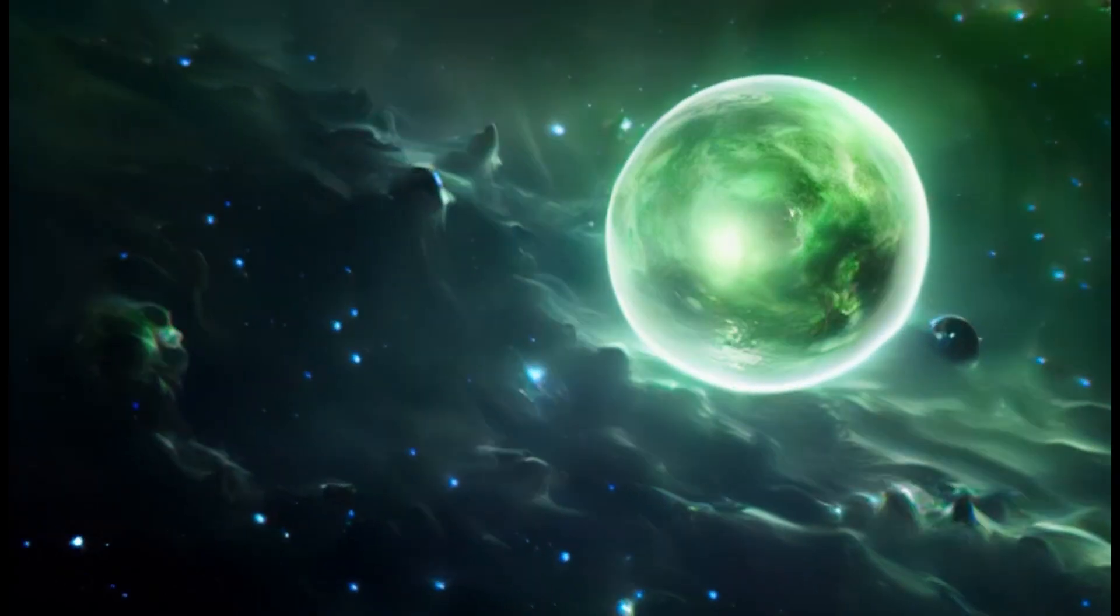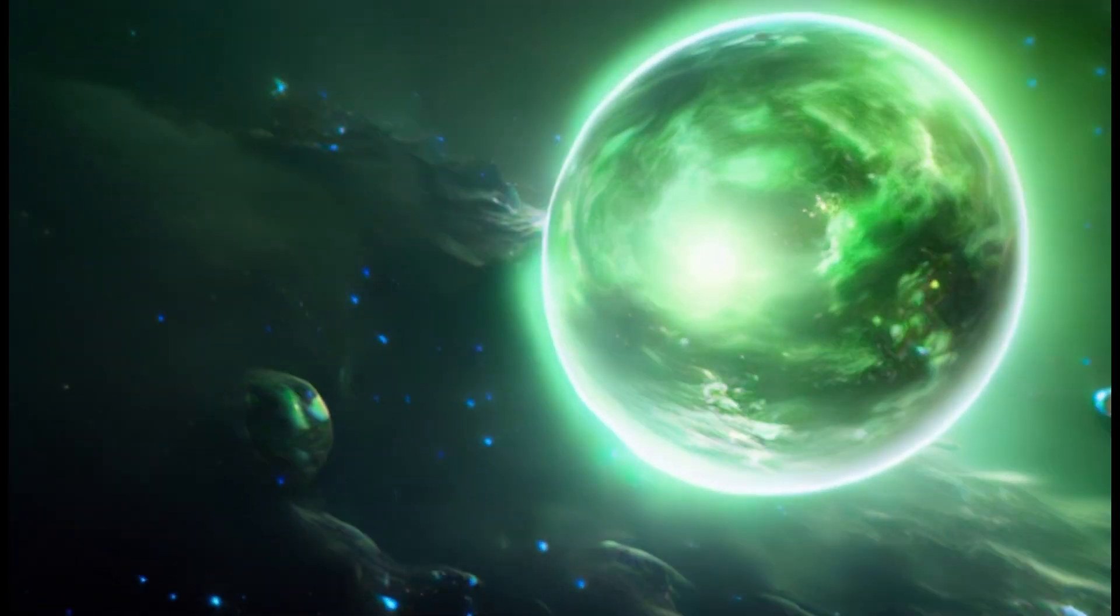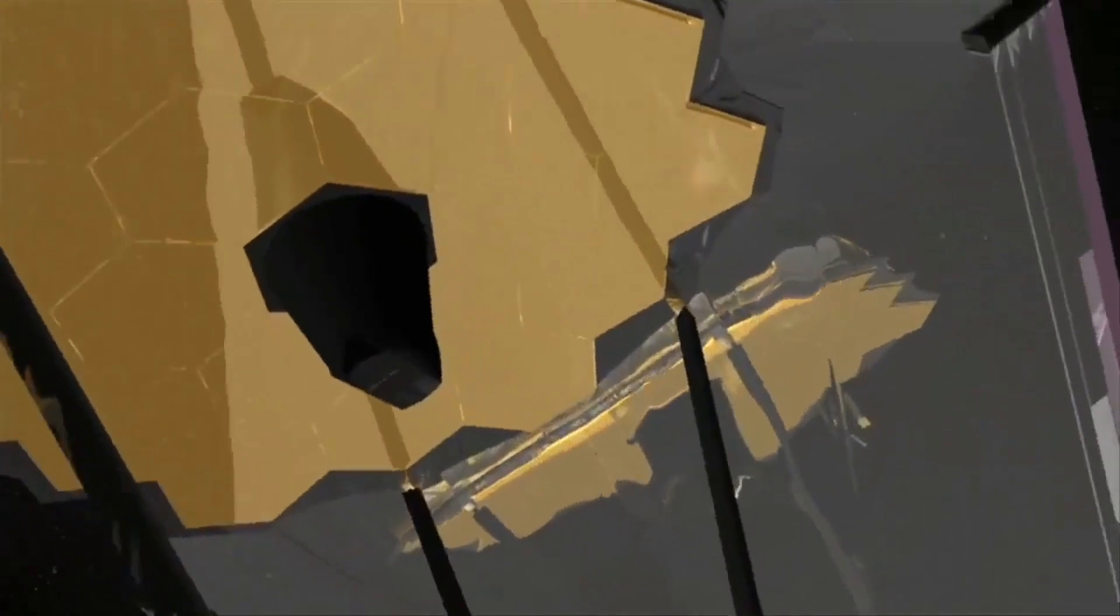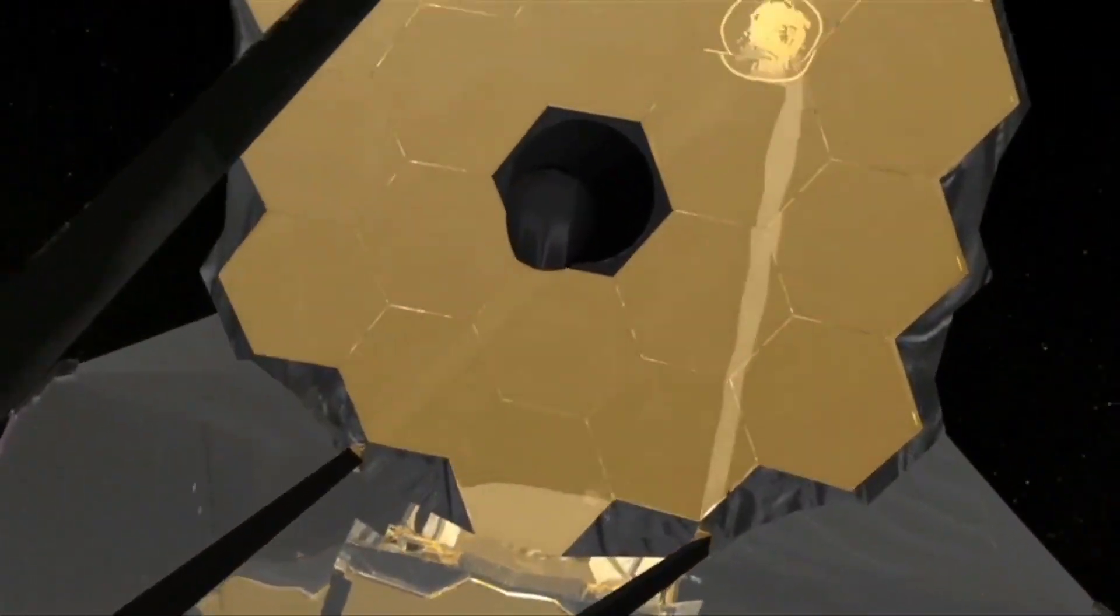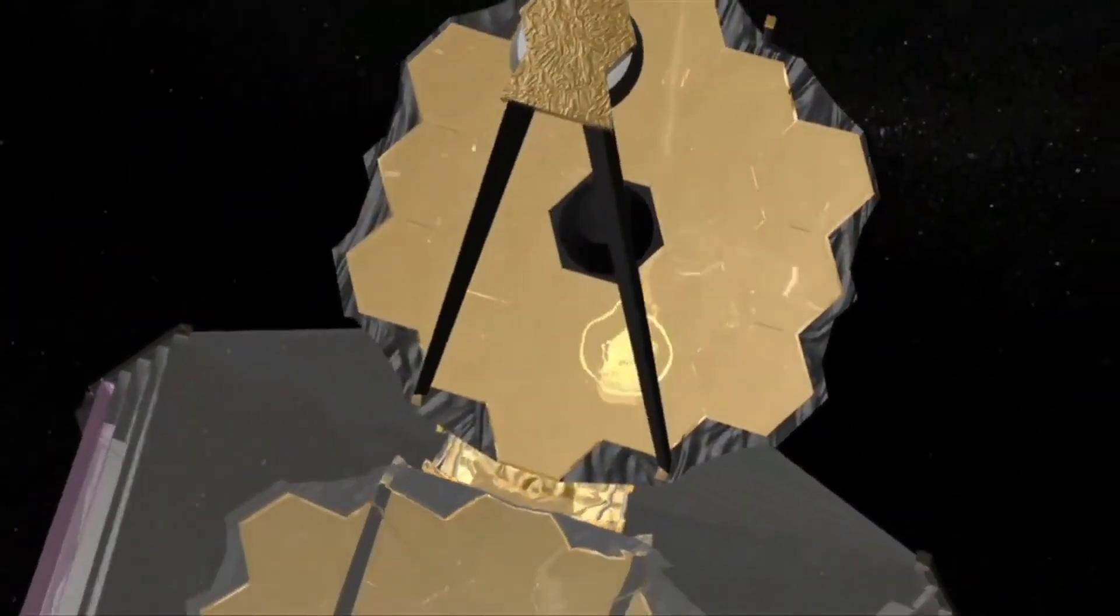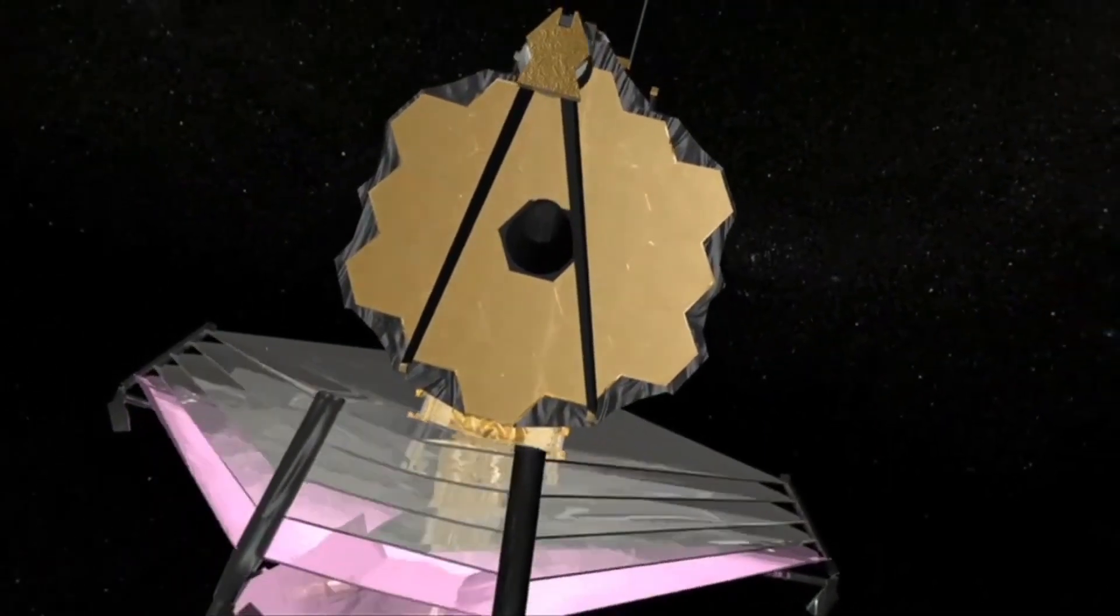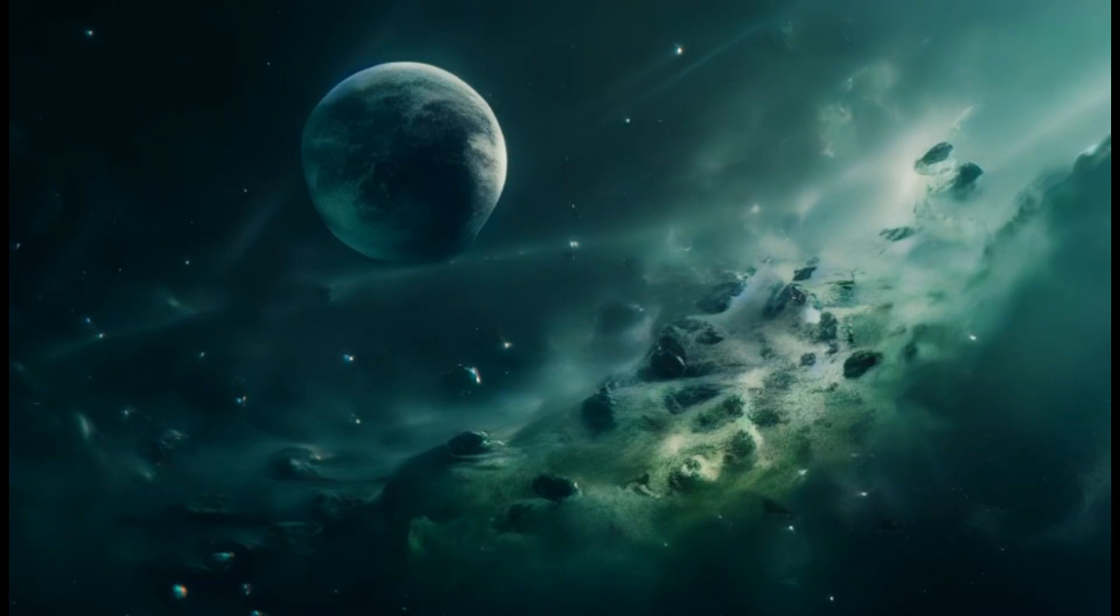But what astronomers found that day was a star in a distant galaxy with a green shift. That has never happened before. We immediately focused the new James Webb Space Telescope onto the star and found an amazing exoplanet. When we zoomed in, we were amazed at what we saw.